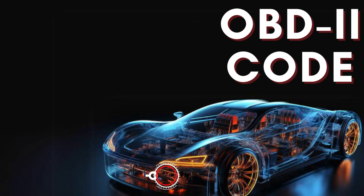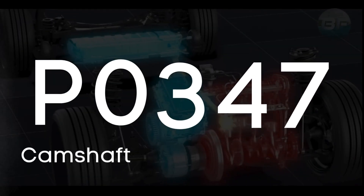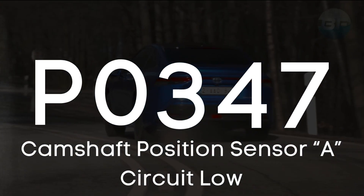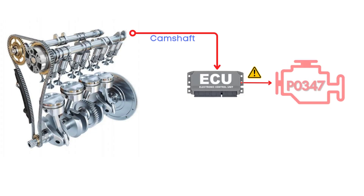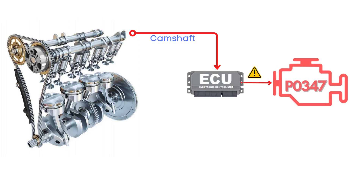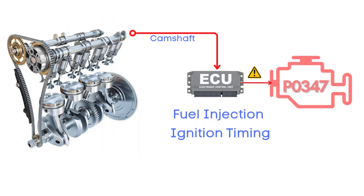In this video, we're diving into everything you need to know about OBD-II trouble code P0347, also known as camshaft position sensor A circuit low. The P0347 code means that the ECM detects that the signal from the camshaft position sensor is outside the expected range, or too low. This sensor plays a super important role because it helps the ECM figure out the exact position of the camshaft, which it needs in order to manage fuel injection and ignition timing.